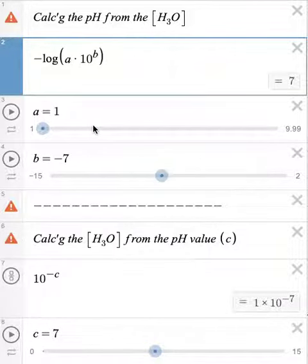Let's say, for instance, we want to calculate the pH of a 2.45 times 10 to the negative third molar hydronium ion solution. To do so, I need to type in 2.45 for A and then negative 3 for B.